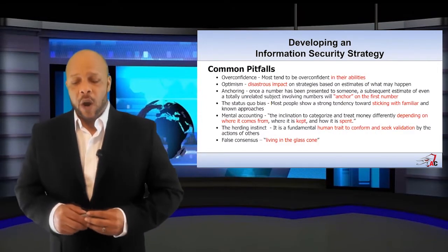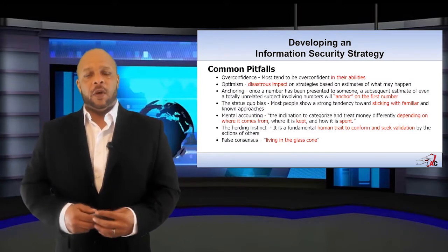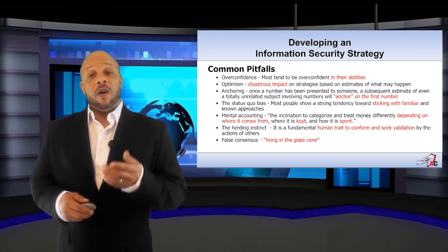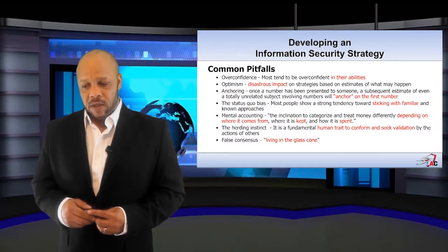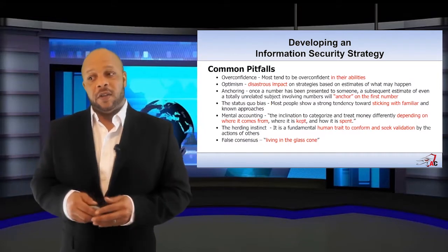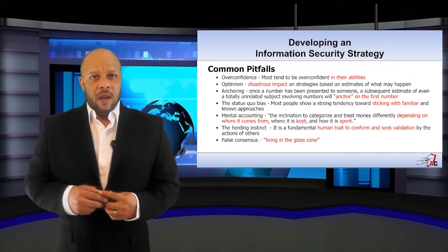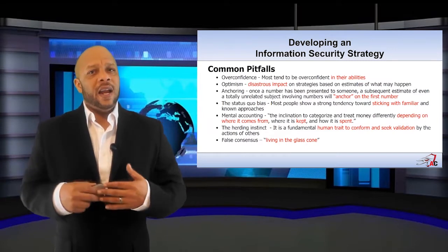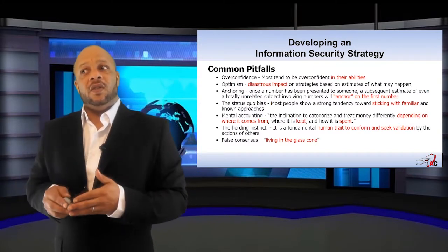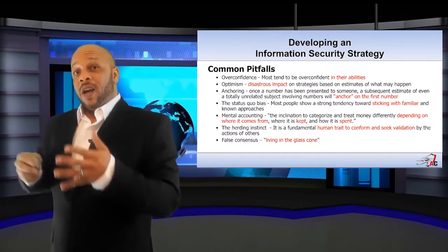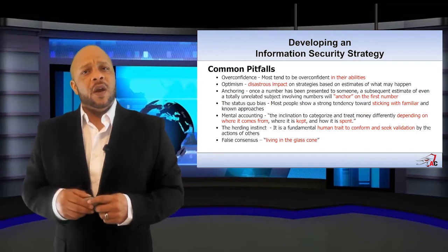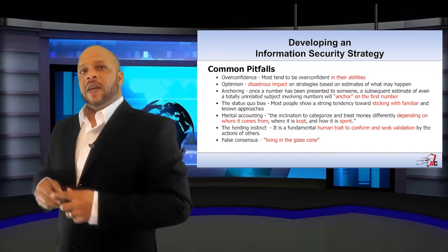Some common issues we need to be aware of as our organization builds and develops our information security policy are overconfidence and optimism. Most people are overconfident in their own abilities and think they look weak if they ask for help, being overly optimistic about the starting posture versus what we think it looks like. We also need to be careful of a situation called anchoring — when we're presented with a set of numbers, we have a tendency to evaluate all subsequent numbers based on the first number that we saw. This can be dangerous, especially when trying to get a complete picture of the environment.